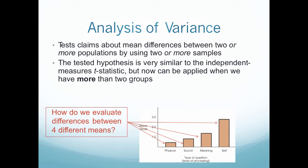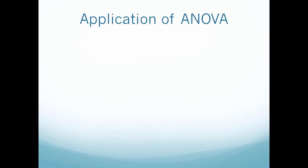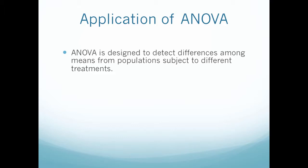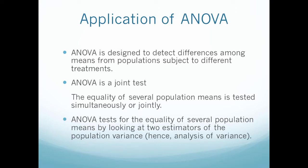The ANOVA is designed to detect differences among means from populations subject to different treatments. And we talked about this word treatments in a few different videos, but treatments basically is my different variables or my different contributors to my overall model. So the ANOVA is also a joint test, meaning the equality of several population means is tested simultaneously or jointly.